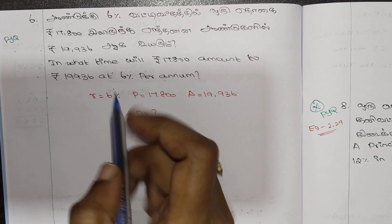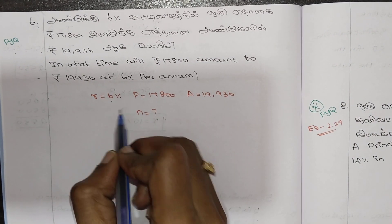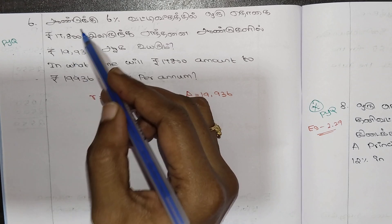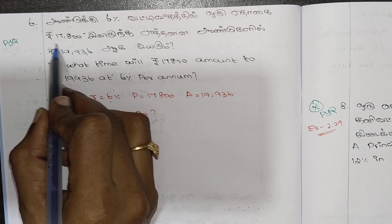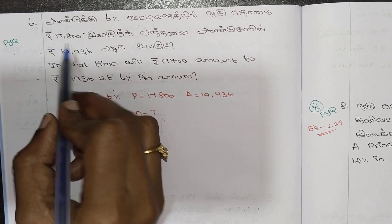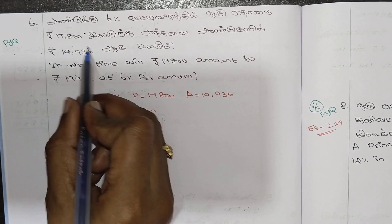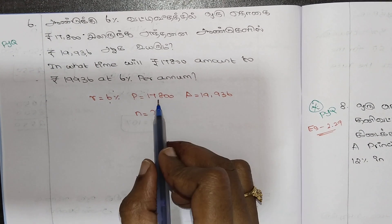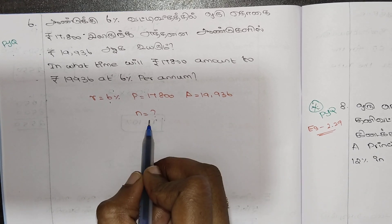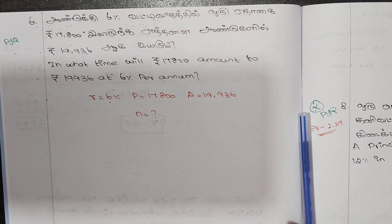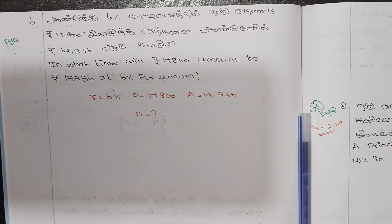If you know the rate of interest — in what time will this amount to 3%? This is the first time we'll see. How do we find the formula?